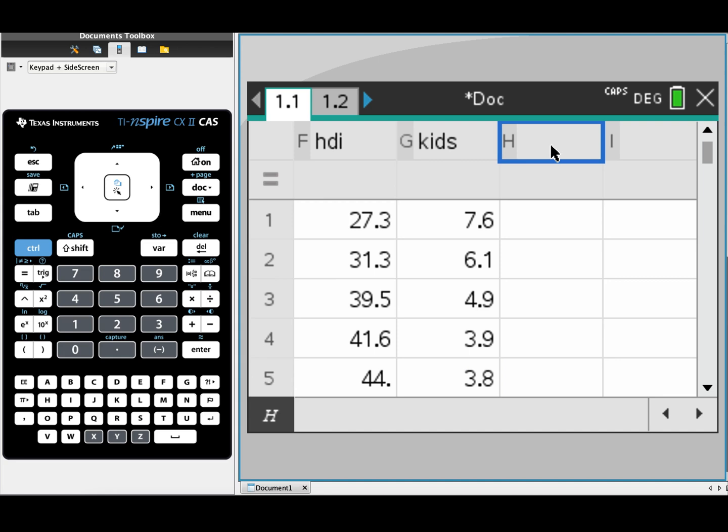So in column H, the next column along for me here, I'm going to give this a name. I'm going to call it L underscore kids, because I know that I'm finding the log of children or log of kids.